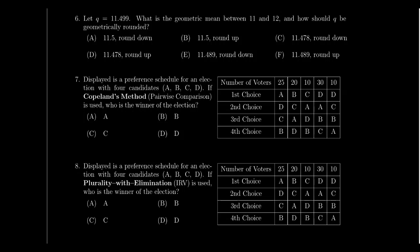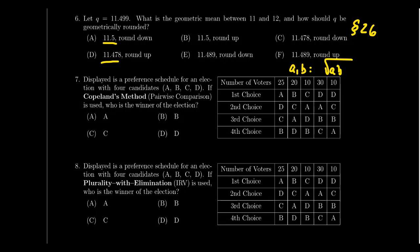Question 6 is about apportionment from Lesson 26, specifically asking you to compute the geometric mean — a skill used with the Huntington-Hill method. Suppose your quota is 11.499, which is in the danger zone near 0.5. You first calculate the geometric mean between 11 and 12 using the formula: the square root of A times B. The answer choices might be 11.5, 11.478, or 11.489 — some are the geometric mean, some are just distractors.